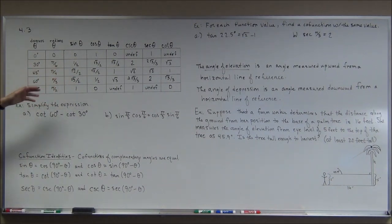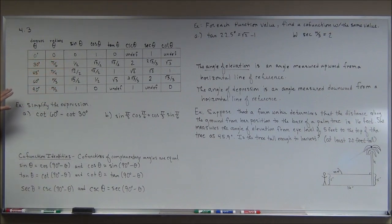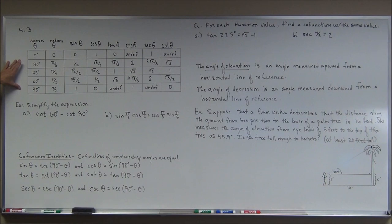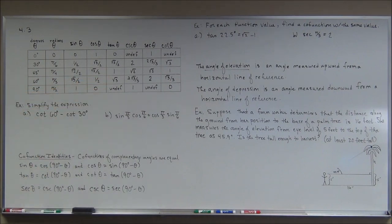We had a table for sine and cosine in an earlier video, but now we've expanded it to include all six trig functions. These acute angles are the ones you have to commit to memory. We're going to use this table to answer a couple of questions and then look at some more identities.